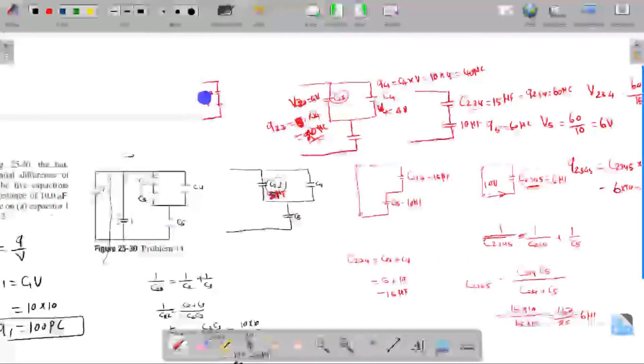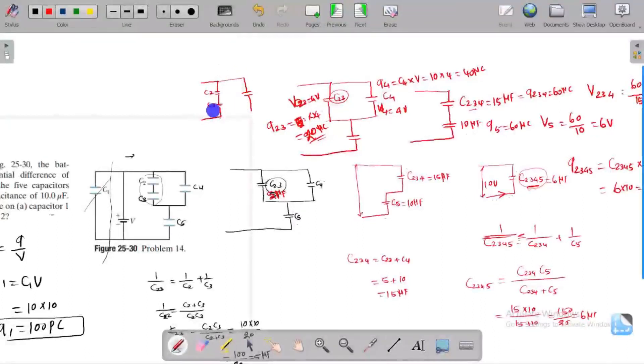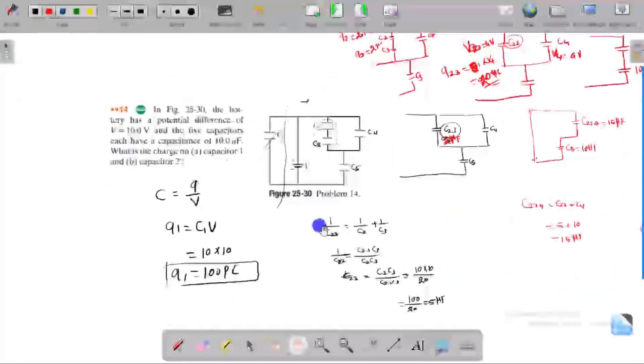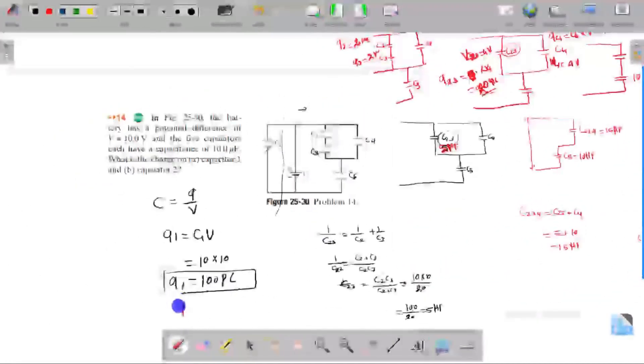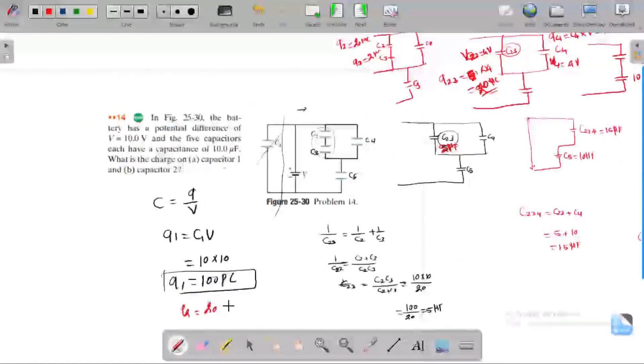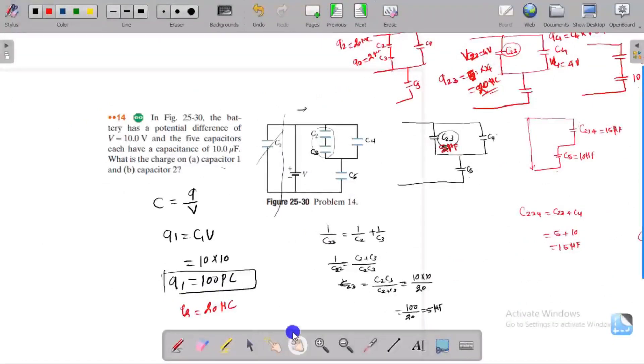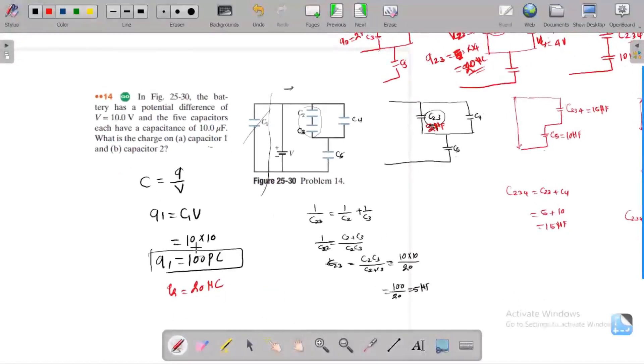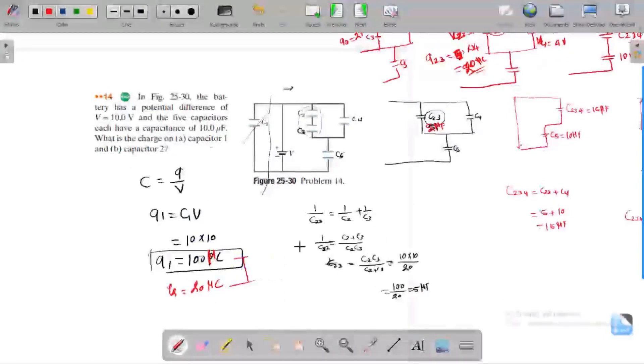C23 is a series combination converted like this: C2, C3, C4, and C5. Now Q2 equals 20 microcoulombs, Q3 equals 20 microcoulombs. We find that the charge in capacitor Q2 equals 20 microcoulombs. So we get the answer.